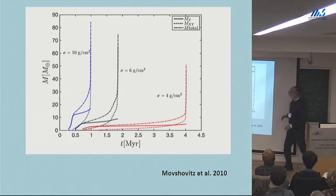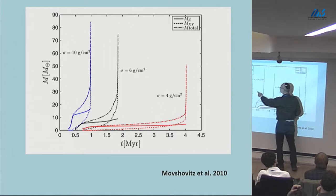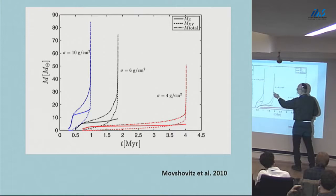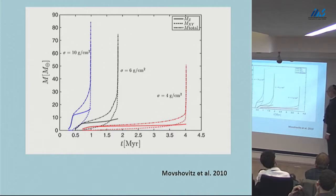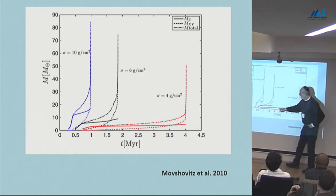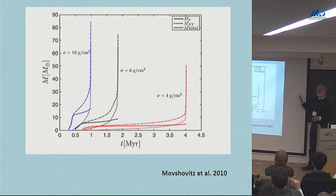The point is that what took 8 million years previously now takes maybe 800,000 years — you've gained a factor of 10. What's nice about it is you can say, I assumed a background density of solids of 10 grams per square centimeter. Maybe I can get away with less. It turns out you can: 6 grams per square centimeter still gets you well under 5 million years; 4 grams per square centimeter brings you about up to the limit. You can make different kinds of planets. This illustrates that the critical core mass can vary depending on how much time you allow. The simple model is correct and is borne out by detailed calculations.